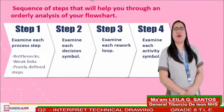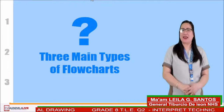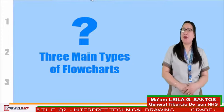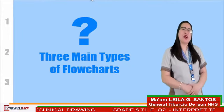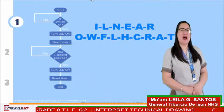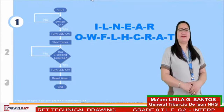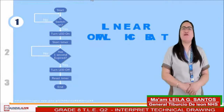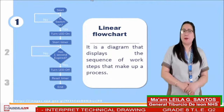Now let us proceed to the three main types of flowchart. Let us try to guess the three main types by identifying the following examples. The first type is a linear flowchart — it is a diagram that displays the sequence of work steps that make up a process.